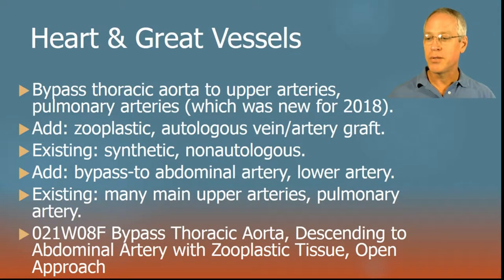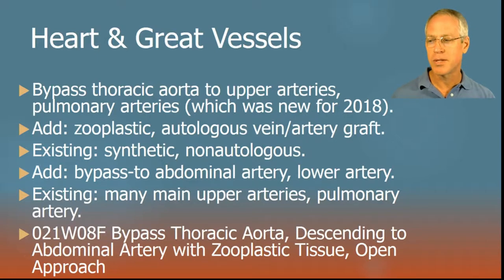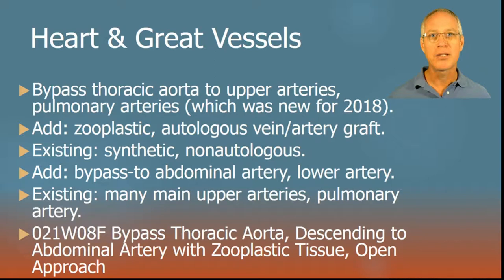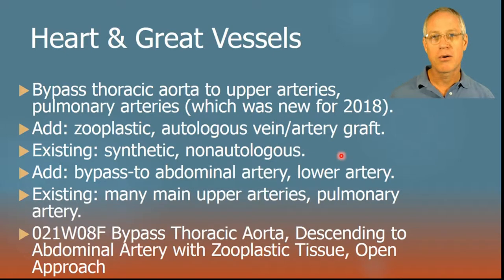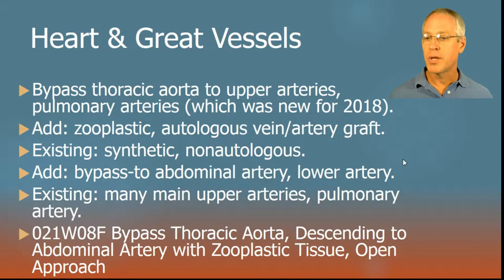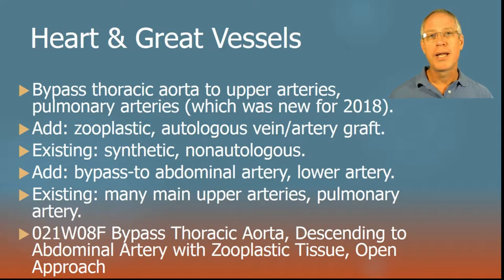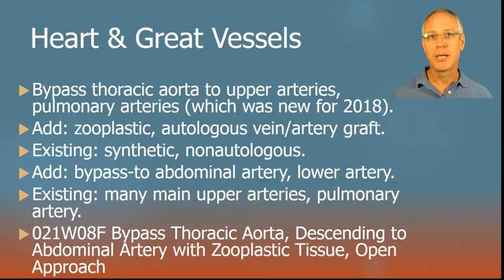Only one CNS change. Now onto the heart and great vessels — these get a little weird. If you work at a tertiary referral center or children's hospital, you're more likely to see some of these. We have bypassing the thoracic aorta to upper arteries and to the pulmonary arteries, with different indications falling on the same PCS table. First, we're adding device values for zooplastic, autologous vein, or artery graft. Bypassing the thoracic aorta to the pulmonary arteries relates to the Blalock-Taussig shunt for blue baby syndromes involving hypoxia.